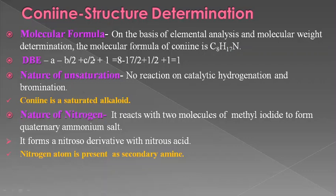The double bond equivalence is given by: A minus B divided by 2, plus C divided by 2, plus 1, where A represents the number of carbon atoms (8), B represents the number of hydrogen atoms (17), and C represents the number of nitrogen atoms (1). Substituting these values, the double bond equivalence equals 1.